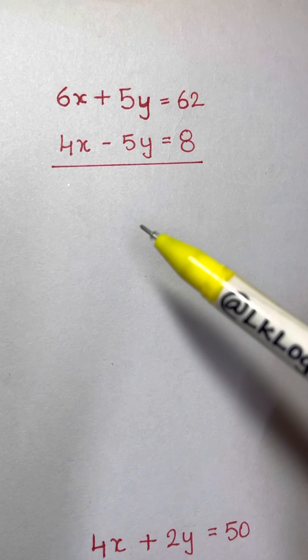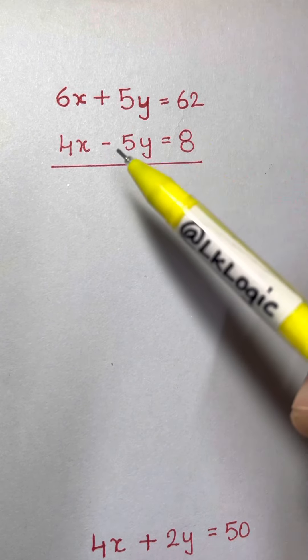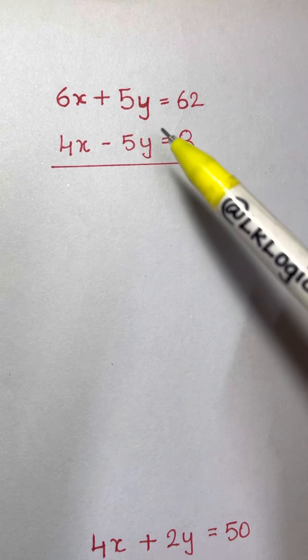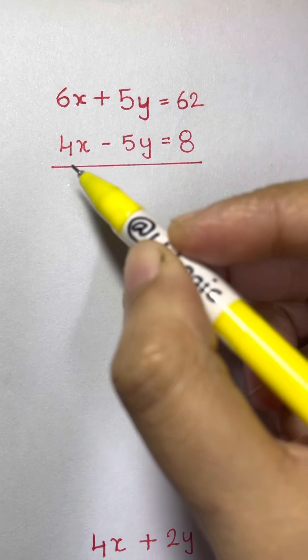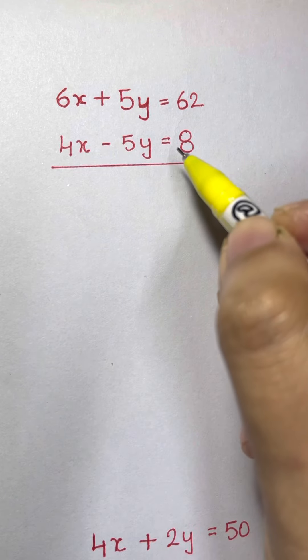Hi everyone, in this video we are going to solve simultaneous equations by eliminating a variable. So here we have 6x plus 5y equals to 62 and 4x minus 5y equals to 8.